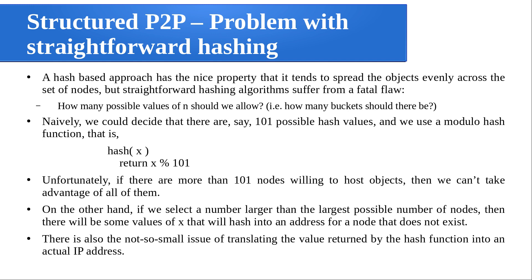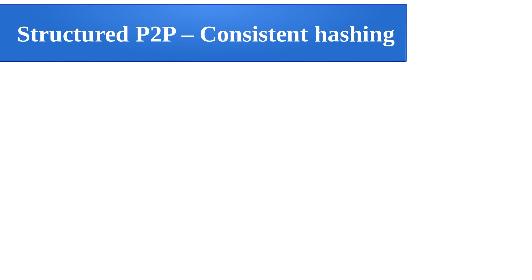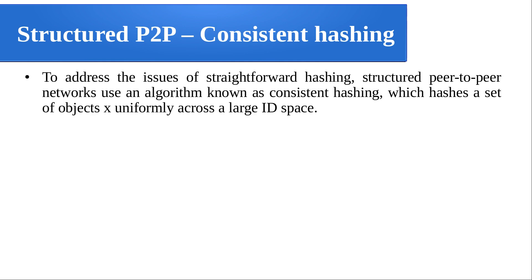To overcome these problems with straightforward hashing, we have a concept called consistent hashing. To address the issues we have seen so far, the structured P2P network uses an algorithm known as consistent hashing, which hashes a set of objects X uniformly across a large ID space. In the previous case, our ID space was restricted to that initial estimate. But here there is no such problem — we are going to take a very large ID space, and to that ID space we map both the object and the node.